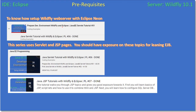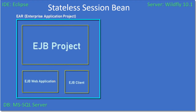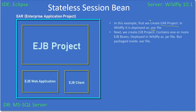EJB learning requires exposure to Java Servlet as well as JSP. Now, the projects we are going to create: first, we will create an EAR project — an enterprise application project that comes with a dot EAR extension. To work with enterprise Java beans, we will deploy this EAR file to the middleware, which here is WildFly 10.1.